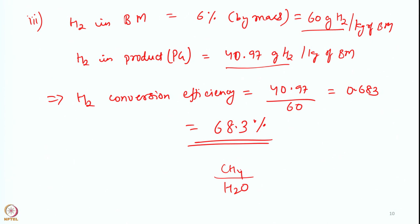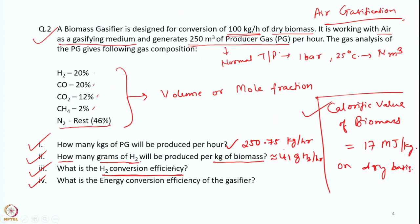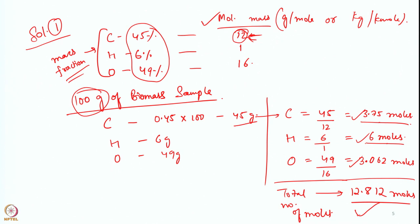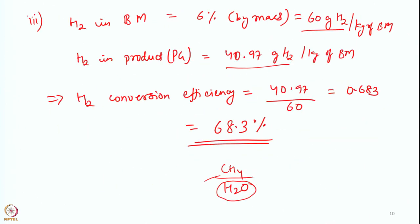It is interesting to know that 68.3% of the hydrogen present in biomass is being converted into elemental hydrogen. The rest goes in the form of methane and H₂O. Methane at 2% is also a useful fuel form, while H₂O gets condensed out of the cold gas and is not counted.